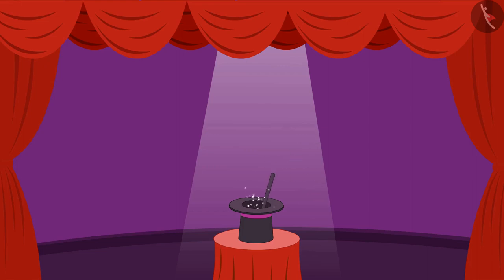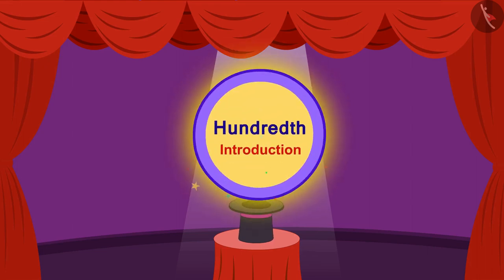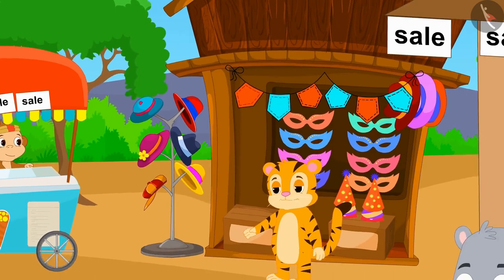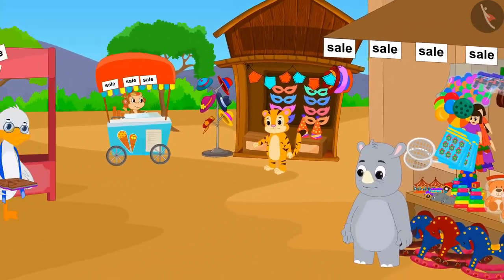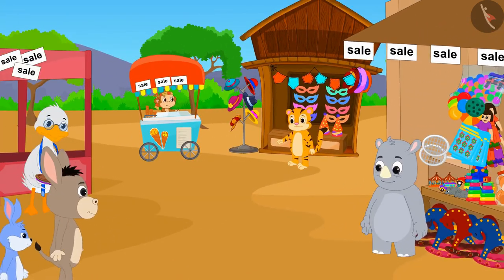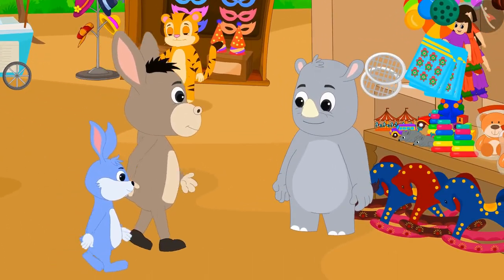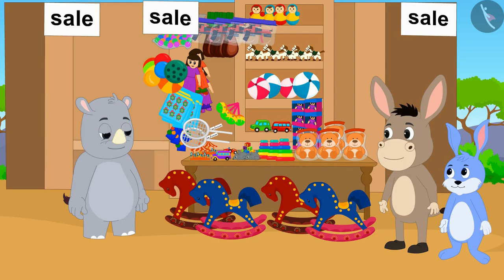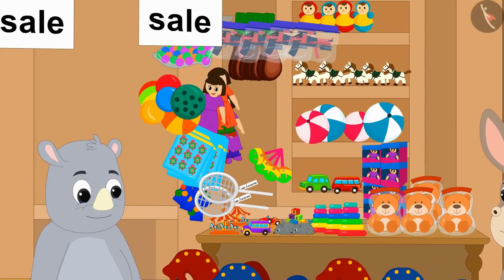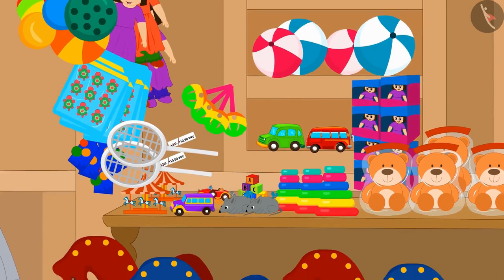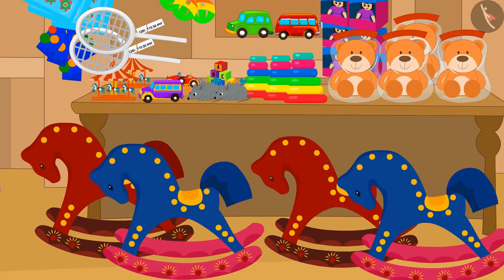Hello children. In this video we will learn about what is hundredth. There is a sale going on in several places in the Champapur market. Bunny and Bhola have come to the market to shop. First they have come to Gaggoo's shop to buy toys. There is a huge discount on toys at Gaggoo's shop in the sale.